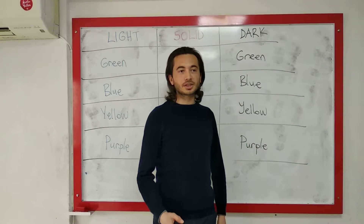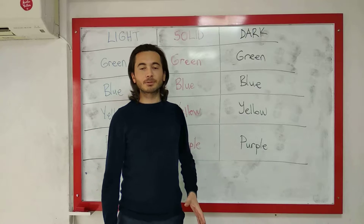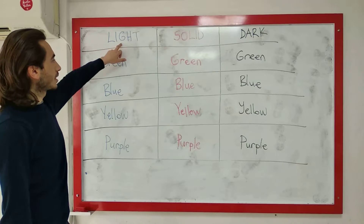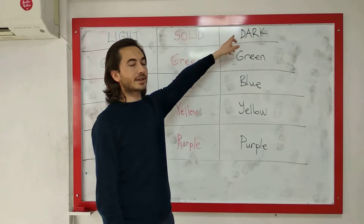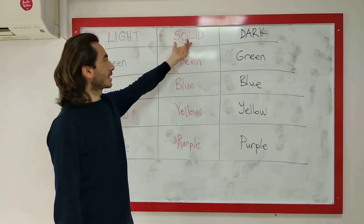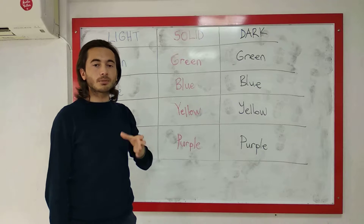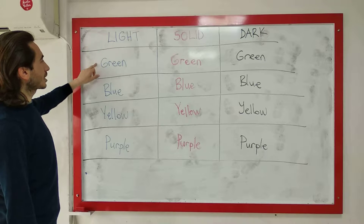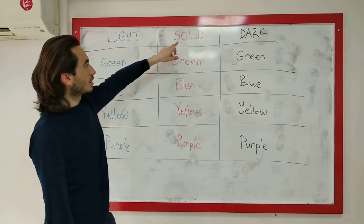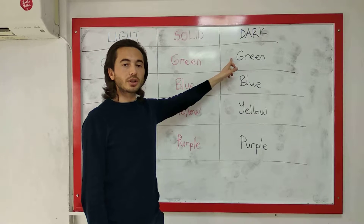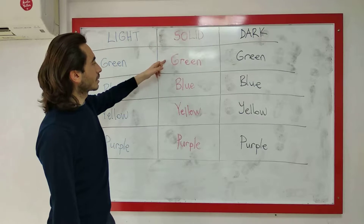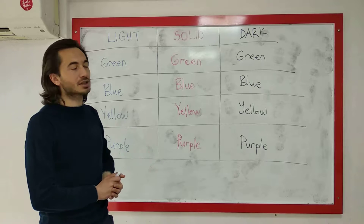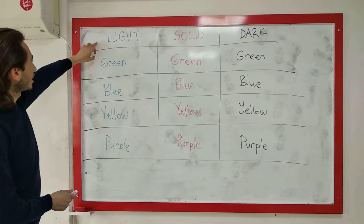Şimdi renkleri temel olarak üç gruba ayırabiliriz. Light açık demek, dark ise koyu demek, solid ise ikisinin tam ortası — tam veya gerçek diyebiliriz. Yani light green dersen açık yeşil, dark green dersen koyu yeşil, solid green olunca ikisinin tam ortası — açık da değil, koyu da değil, tam yeşil veya gerçek yeşil şeklinde söyleyebiliriz.